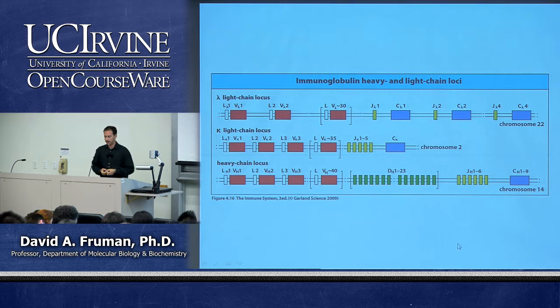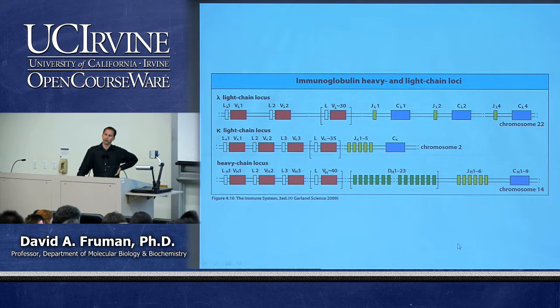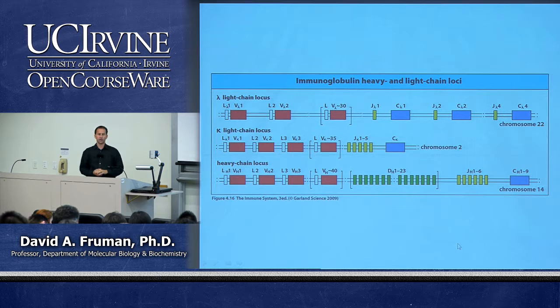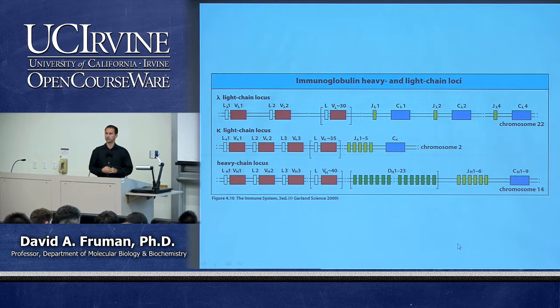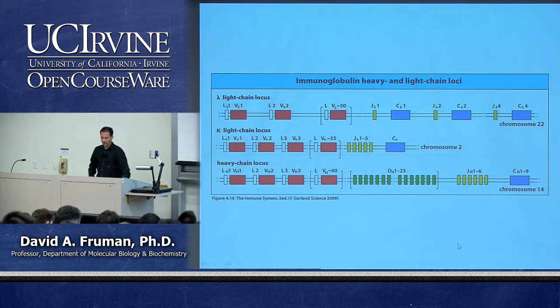An exon is a region of genomic DNA that contains protein coding information or untranslated regions of the mRNA — something that's transcribed. A gene segment is a piece of a gene used for the process of VDJ rearrangement, which is the subject of this lecture. To understand these processes you really have to be solid in molecular biology — exons and introns, mRNA splicing, and DNA recombination. If you barely squeaked by in molecular biology, you'll need to go back and study.